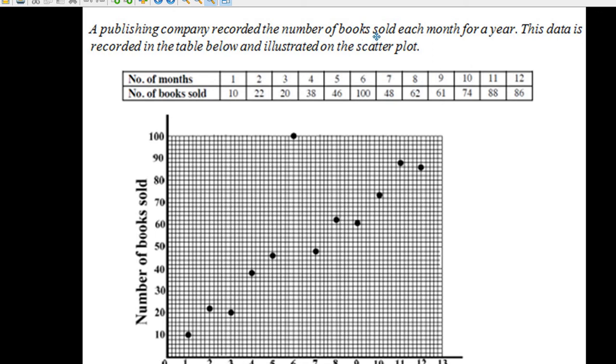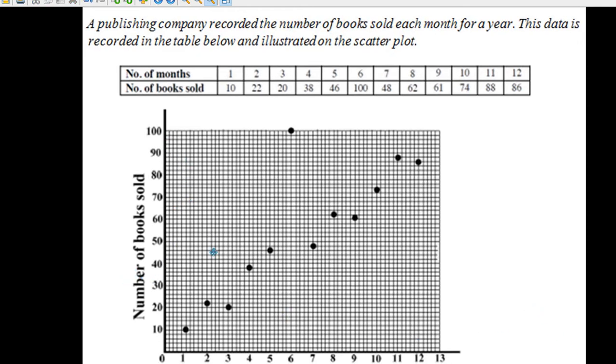We've got a publishing company that recorded the number of books sold each month for a year. Here's the first month, second month, all the way to the 12th month. There's the number of books sold with different numbers. And then we just plot the number of months in the bottom, and we plot the number of books sold up here. It looks like these are all going - one's way out there. It's called an outlier. But here's all your points here. It looks like as the months go on, the number of books sold go up. So it looks like a linear relationship.